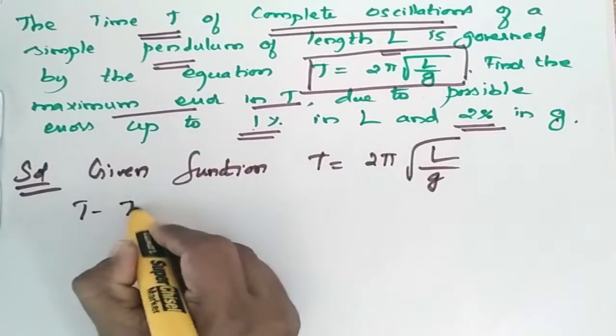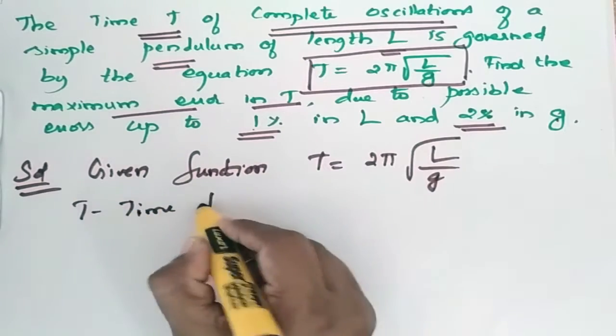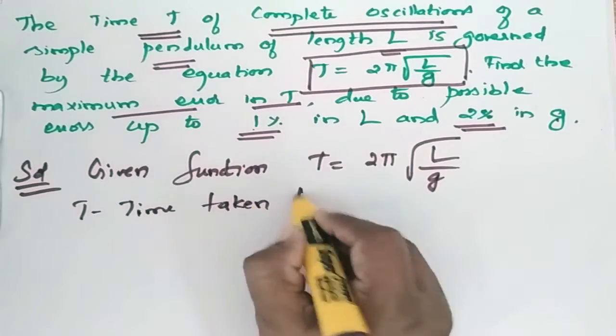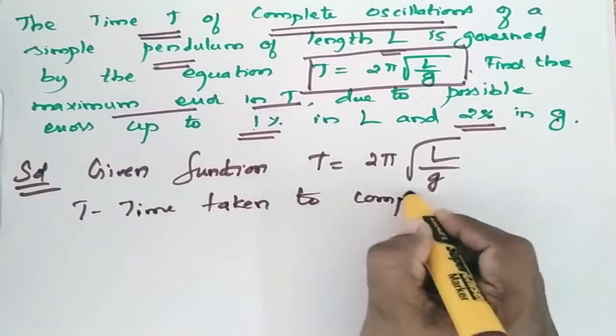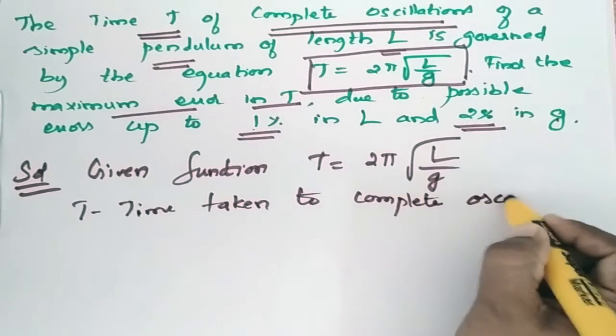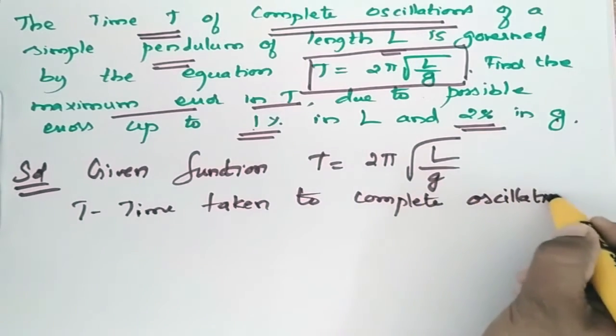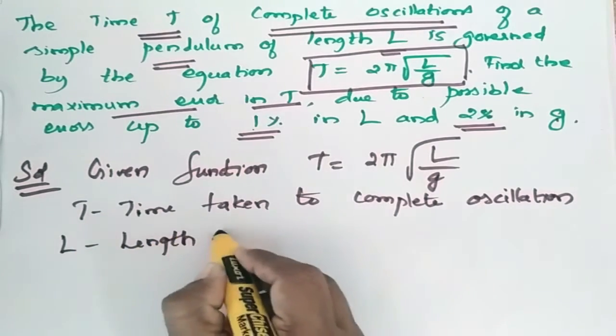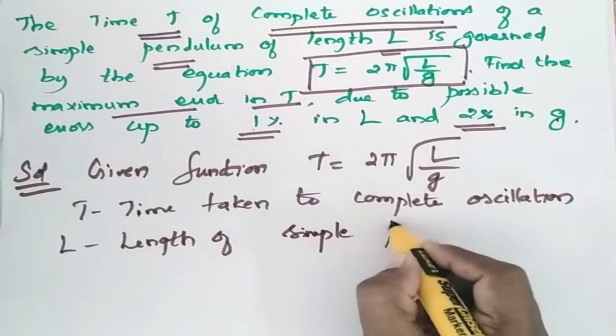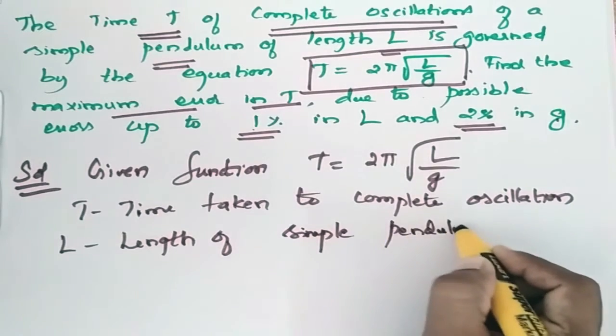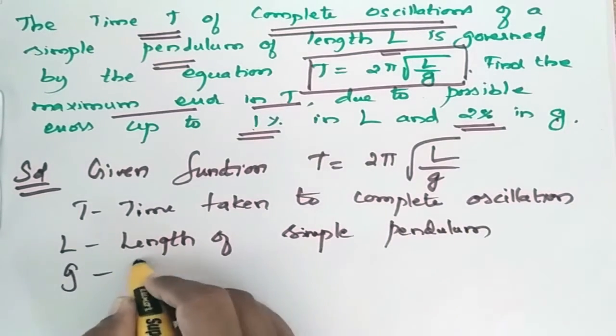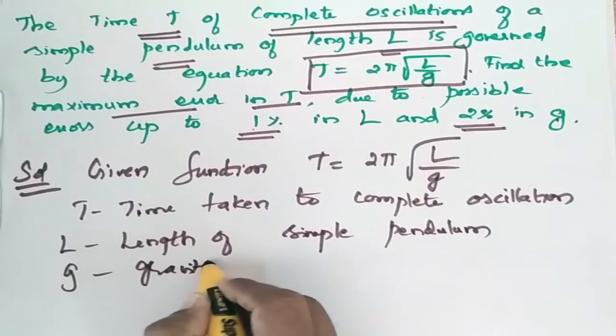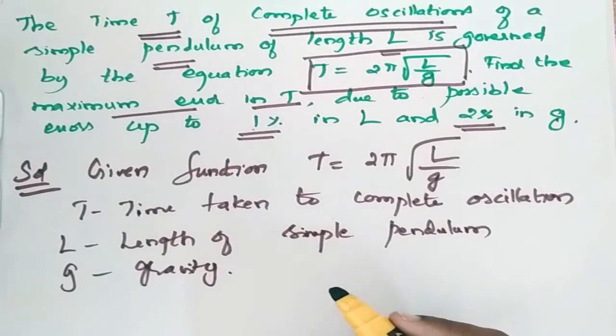T is the time taken for complete oscillation, L is the length of simple pendulum, and g is the gravity.